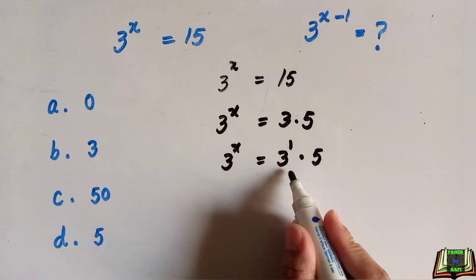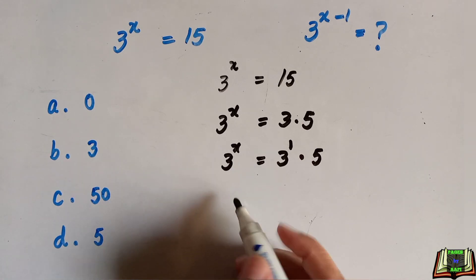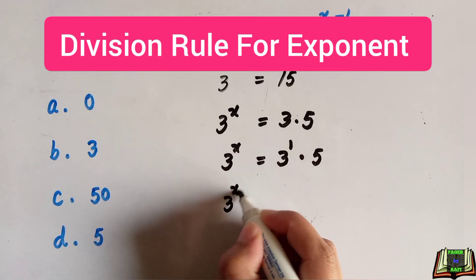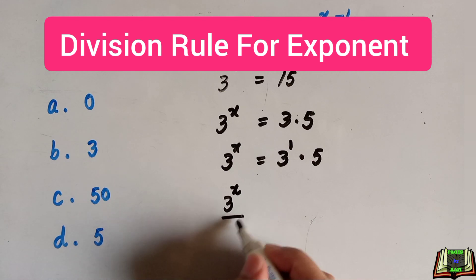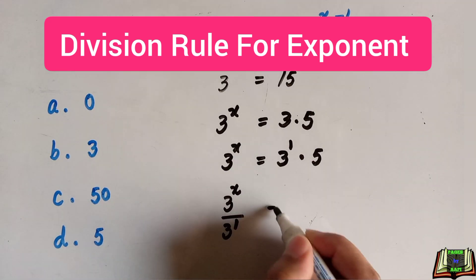Now we are going to move this 3^1 to the left-hand side: 3^x ÷ 3^1 = 5.